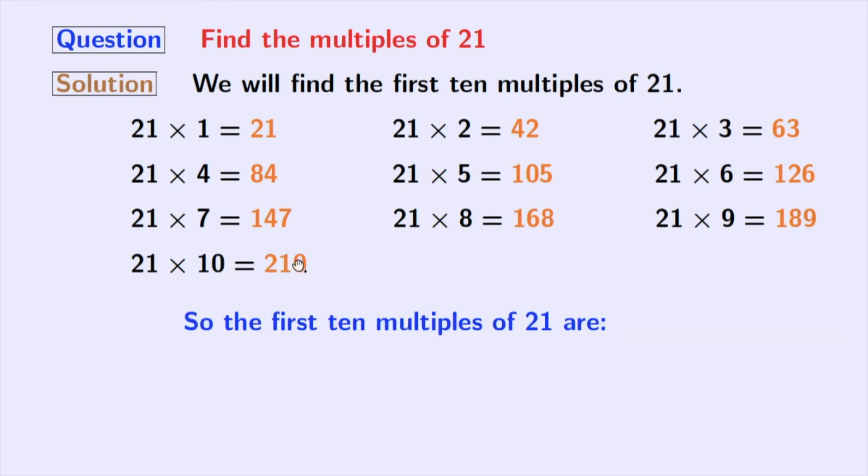Now, we have obtained all the first 10 multiples of 21, which are the orange ones. These are 21, 42, 63, 84, 105, 126, 147, 168, 189, and 210. Following the same way, you can find more multiples of 21.